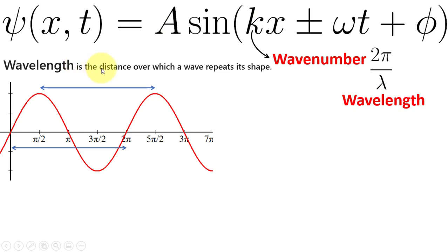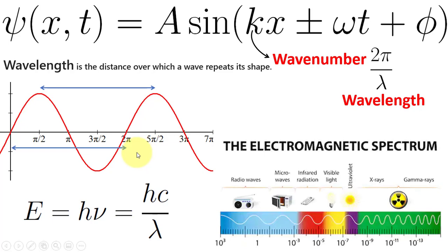Wavelength is the distance over which a wave repeats its shape. The wave starts from one point and its next identical point defines the wavelength. The wave covers a complete cycle of 2π radians or 360 degrees. Wavelength can be measured from any position — for example, from one peak to the next peak is one complete wavelength or one cycle.